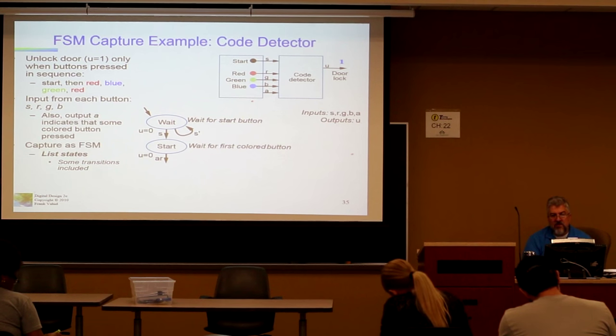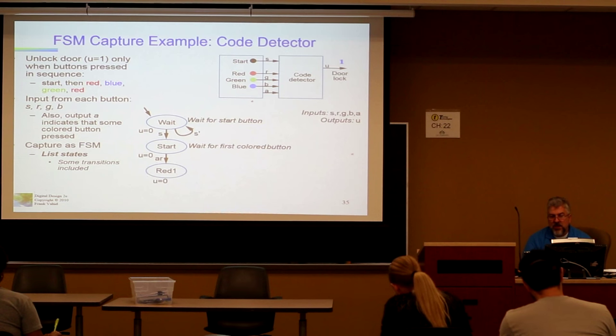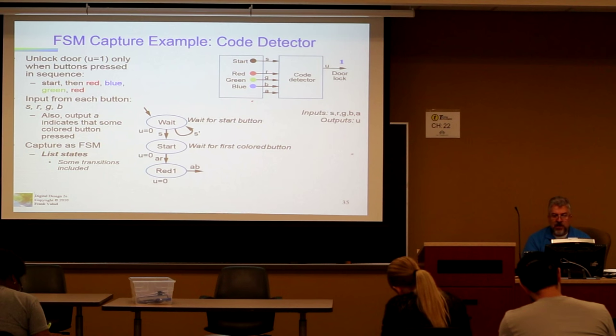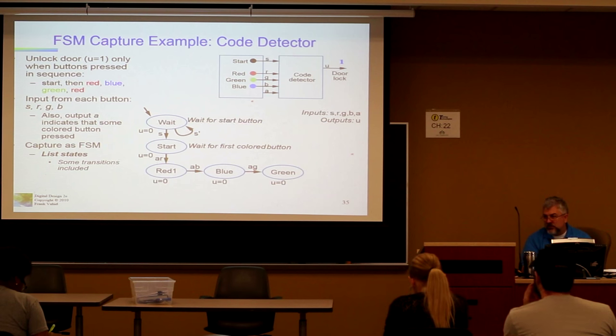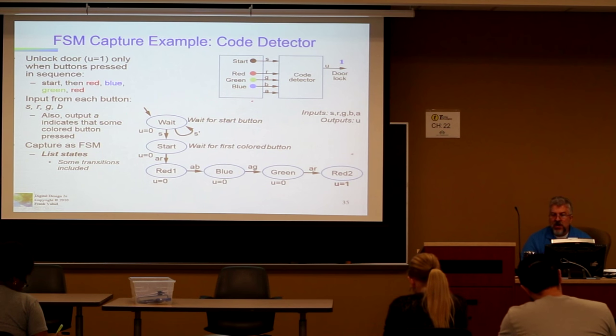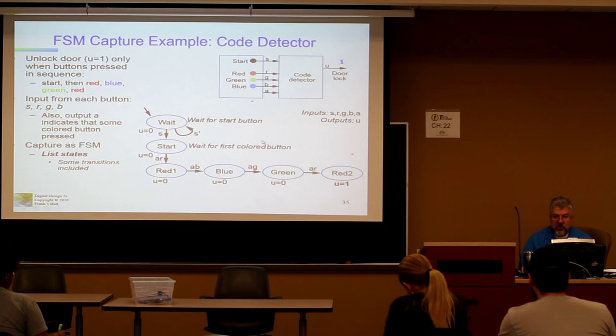It allows us to verify that we can go between one state and the next. So we know that if we press the R button, we're in the red button was pressed state. That's good, all right? And then if we press the blue button next, we go to the blue button has been pressed. We're still good. And we then press green, then we're going to the green state. We're still possibly could be correct, right? And then we press R, that means that we're in the red one state. We unlock the door, and then at the next clock then we'll go back to wait.